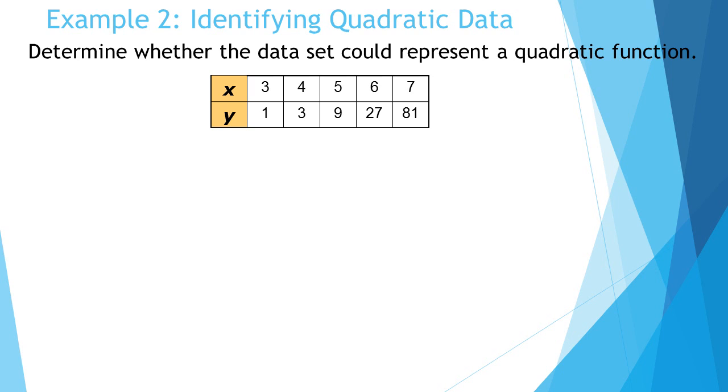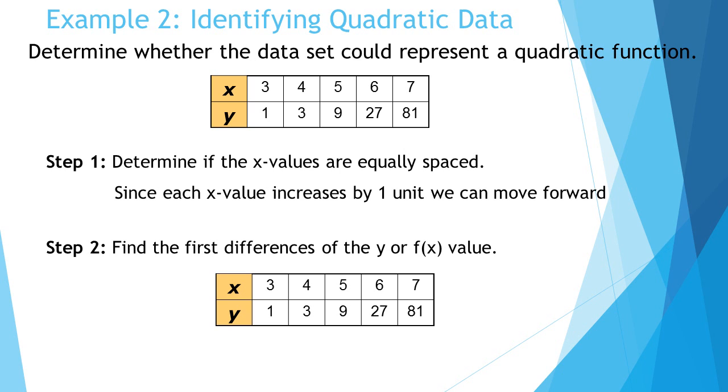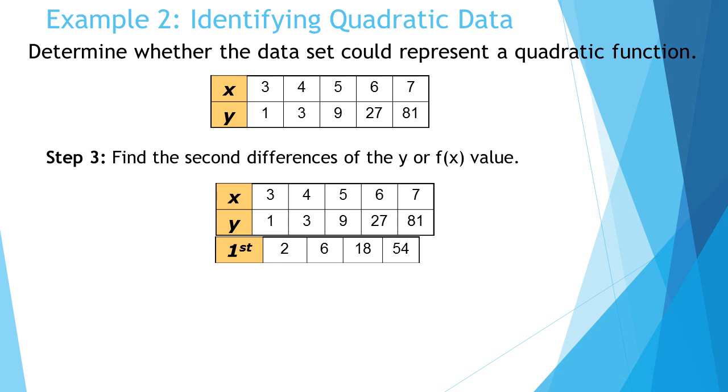Let's look at the second one, same concept. 3 to 4 is 1, 4 to 5 is 1, 5 to 6 is 1, 6 to 7 is 1. So we just determined the x values are equally spaced, they all increase by a unit of 1. Now find the first differences for the y or f(x) value - the difference between 1 and 3 is 2, 3 and 9 is 6, 9 and 27 is 18, and 27 to 81 is 54. Check your second differences - from 2 to 4 is 4, from 6 to 18 is 12, from 18 to 54 is 36. Since the second differences are not constant, this is not a quadratic function.